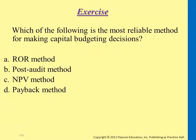Which method is the most reliable for making capital budgeting decisions? The NPV method considers time value of money — it's more comprehensive compared to payback period and ROR (rate of return). ROR and payback period are typically used for projects lasting about three to five years. Post-audit is not really a method; it's basically just evaluation of projects.